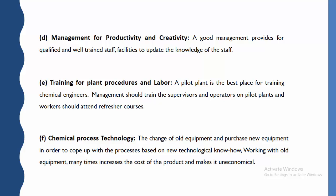The last parameter is chemical process technology. As per the increase in knowledge of technology, old equipment should be replaced and new equipment purchased in order to cope with processes based on new technology. Working with old equipment many times increases the cost of the product. As technology changes, we have to update accordingly. These are the different parameters required for establishing a chemical industry.